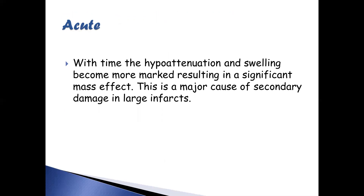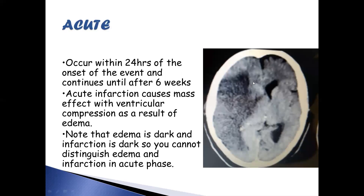This mass effect is a major cause of secondary damage in large infarctions. Acute infarction occurs within 24 hours of onset and continues until about six weeks. It causes mass effect with ventricular compression as a result of edema — you may see midline shift. Note that both edema and infarction appear dark on CT, so you cannot distinguish them in the acute phase.